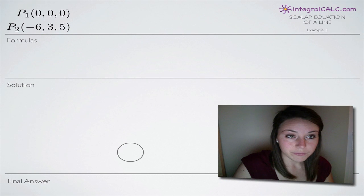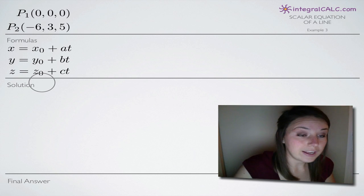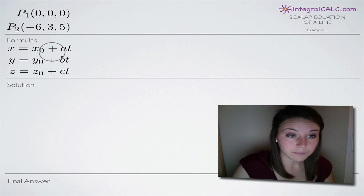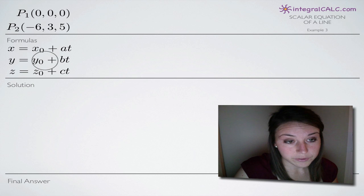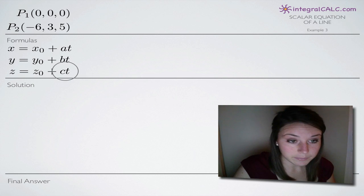So along with this information, we're going to need three formulas to help us find the scalar equations of this particular line. The first one is x = x₀ + at, y = y₀ + bt, and z = z₀ + ct.